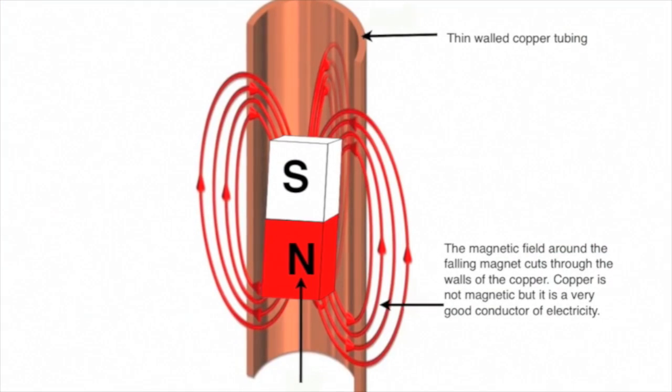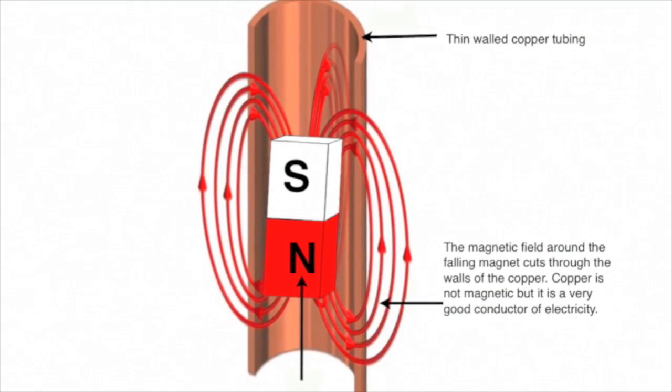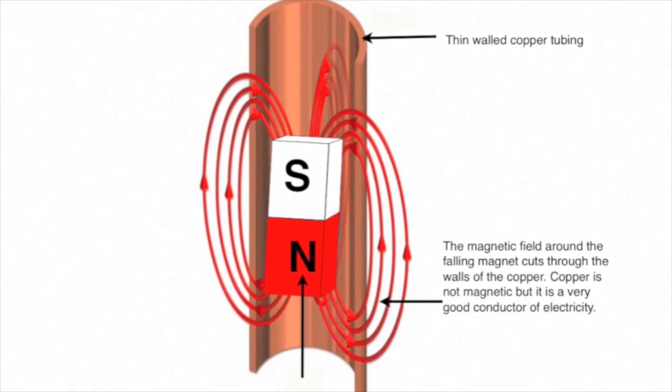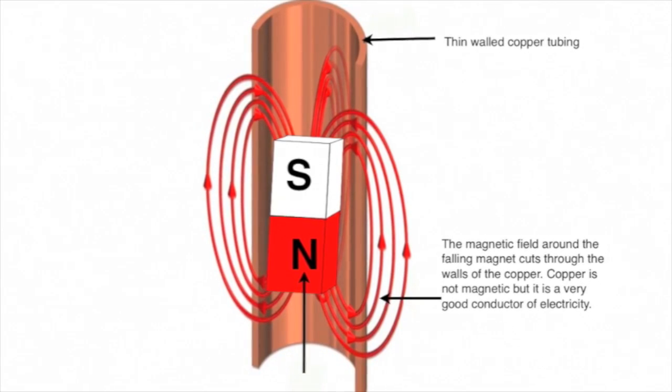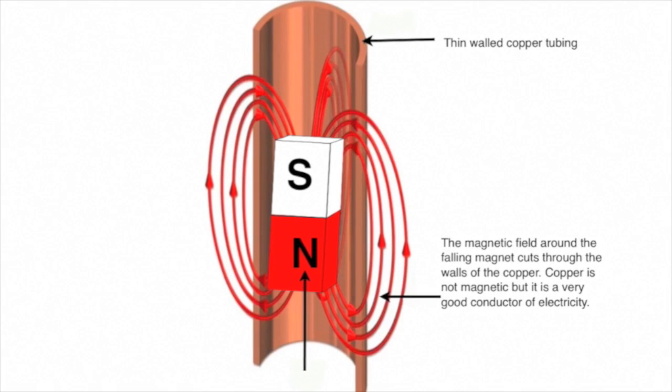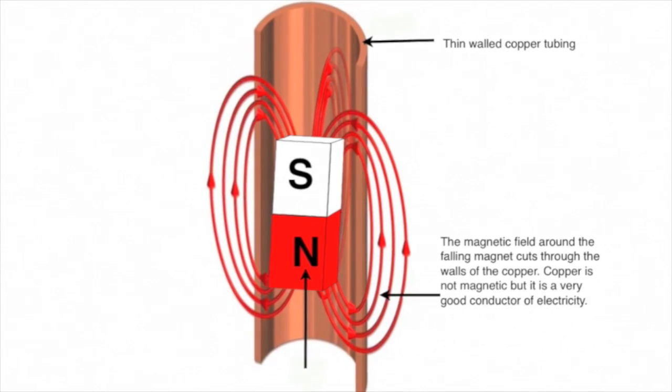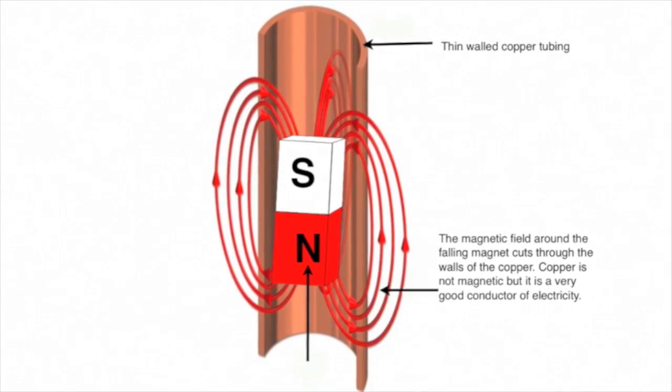As the magnet falls, the magnetic field around it cuts through the copper tube. Now copper is not magnetic itself, but it is a very good conductor of electricity. So the magnetic field induces a current to swirl around in the copper tube.